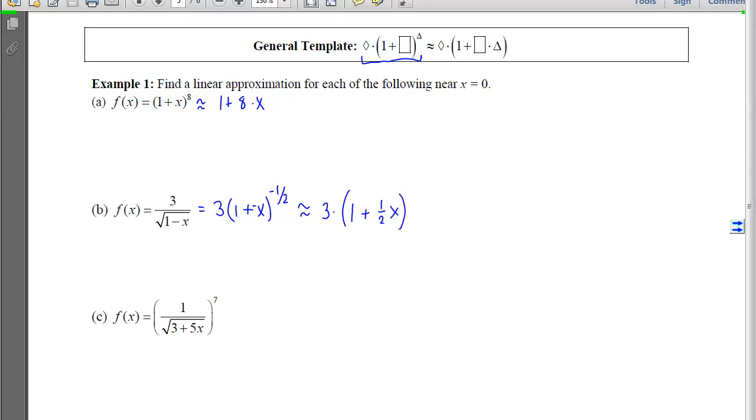If we look at part c now, which is the most complicated of the 3, we can see that we have a fraction that we need to deal with, we have a root that we need to convert to a power, and we have a 3 here instead of a 1. So the first thing we're going to do is rewrite this as (3 + 5x) raised to a negative 1/2 times the 7, which gives me a negative 7/2.